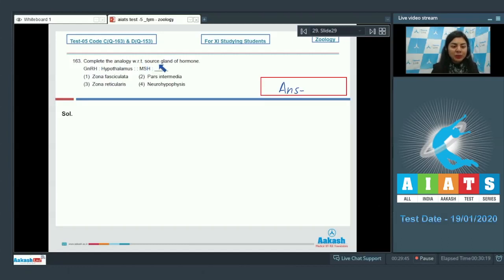Question 163: Complete the analogy with respect to source gland. If GnRH is to hypothalamus, then MSH is to? If we look at the correlation between GnRH and hypothalamus, then we know that hypothalamus is source of GnRH, so we have to find the source of MSH.